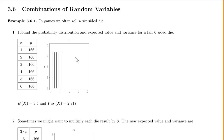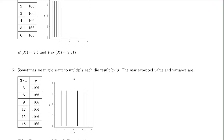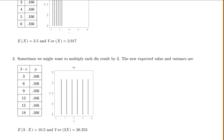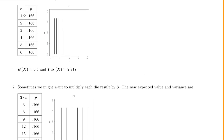There are times we might want to multiply each die result by something. For example, to get a range of 100, some people multiply a 10-sided die by 10. In this case, we want to multiply each die result by 3. I took each old x-value and multiplied by 3: 1×3=3, 2×3=6, 3×3=9, 4×3=12, etc. The probabilities stay the same because all we did was change the x-values.